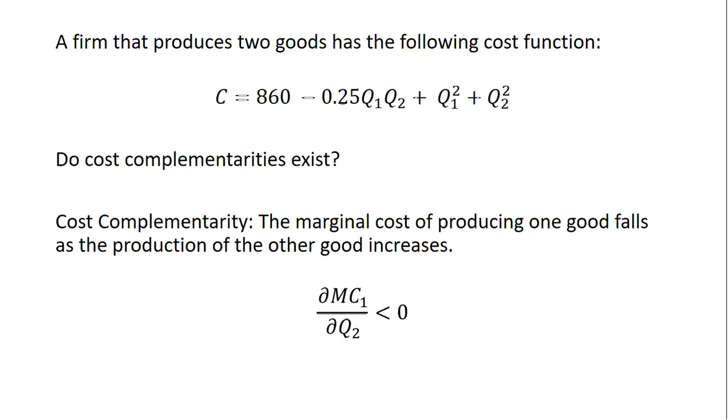Mathematically, what we want to do is take the partial derivative of the marginal cost function of producing good 1 with respect to producing good 2 and see if it has a negative sign—it's less than 0. So let's do the example here.